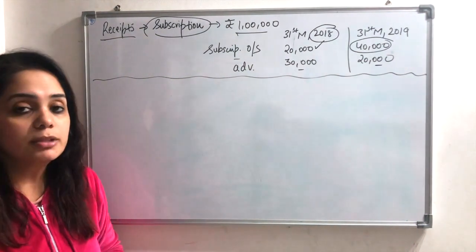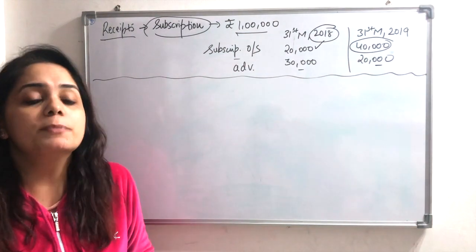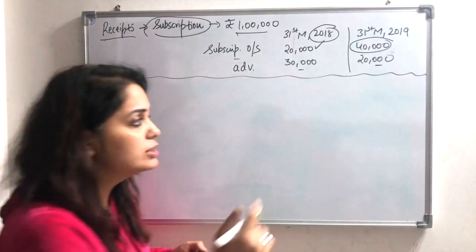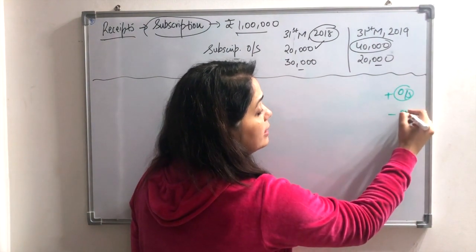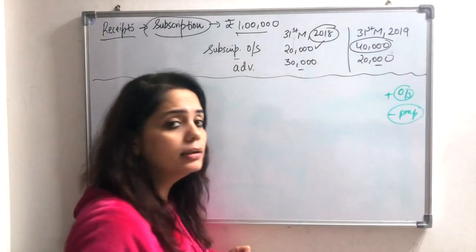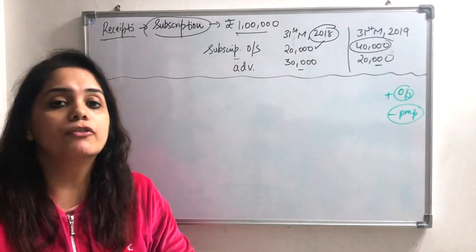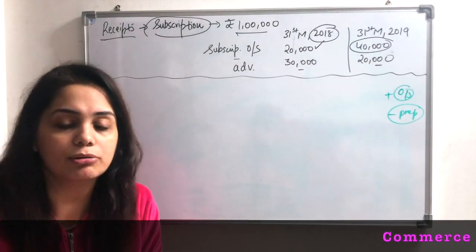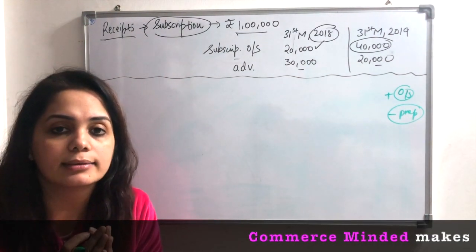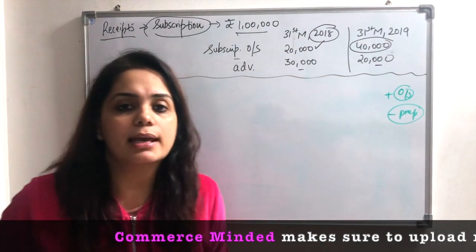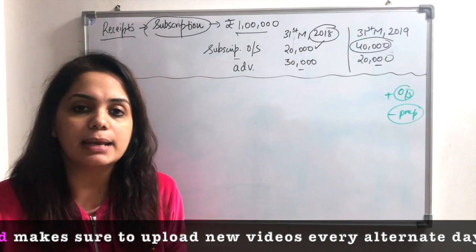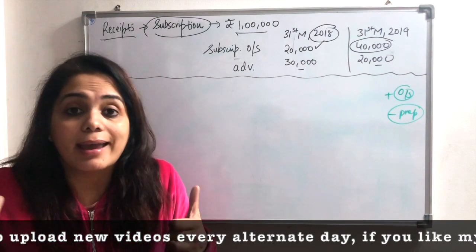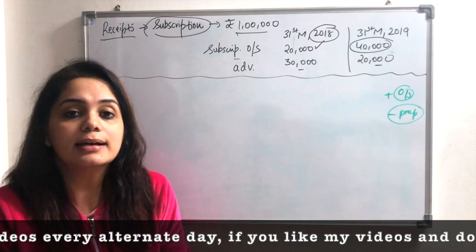If you remember in class 11th, we made financial statements. In that, we made the amount of outstanding plus and prepaid was minus. Why did we do that? Because the amount of outstanding was our this year, so we added it. Why did the amount of prepaid get minus? Because that amount is the next year, which is the first time we paid, but it is not the same year. That's why we subtract it.